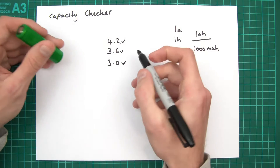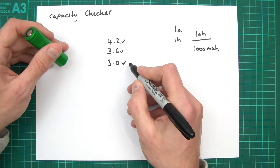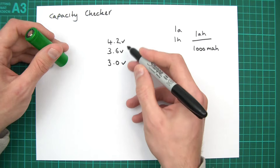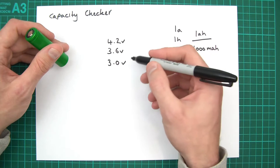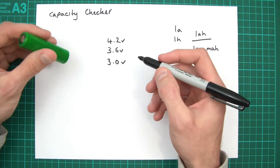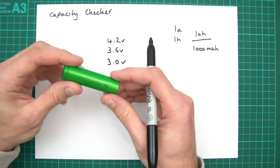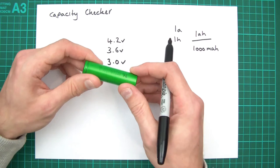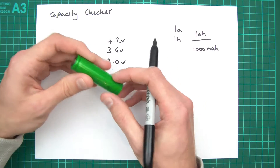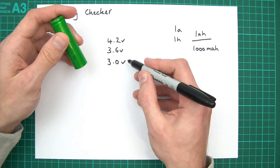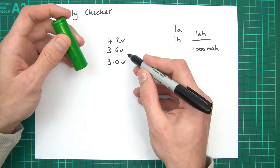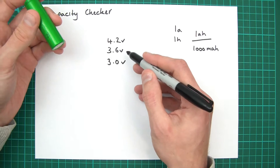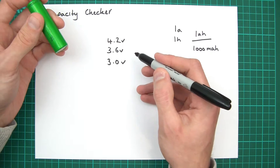That might seem odd — at 3 volts there's still some charge there. But there are two reasons why 3 volts is considered empty. First, discharging too much can damage the cell. Second, at 3 volts it's probably not useful for what it's intended to power — if the device requires 3.6 volts, 3 volts won't work.